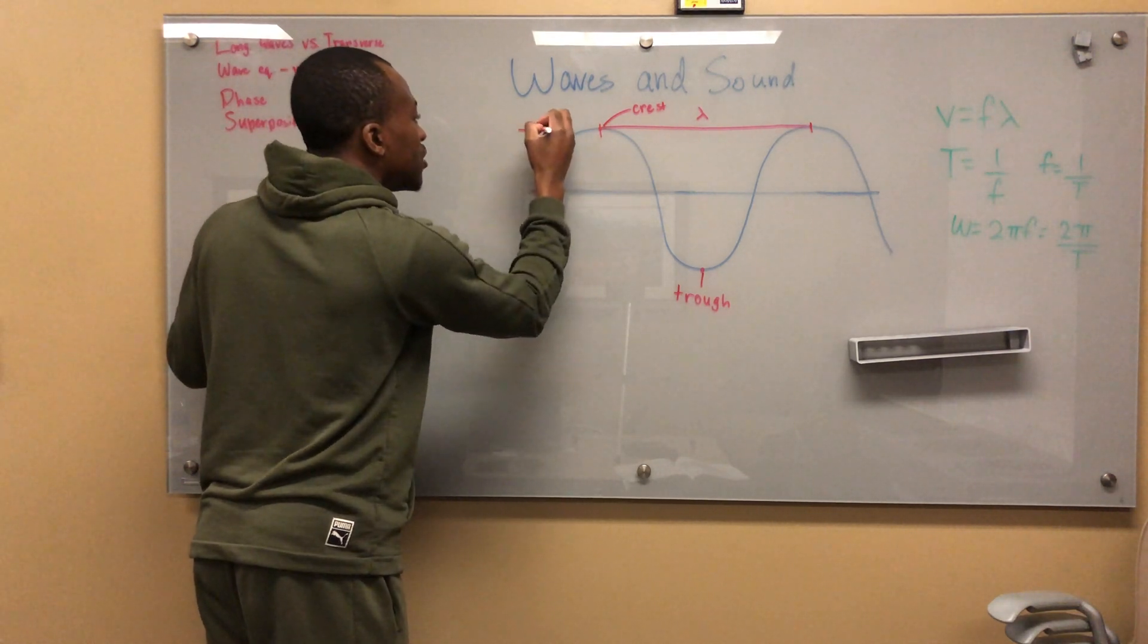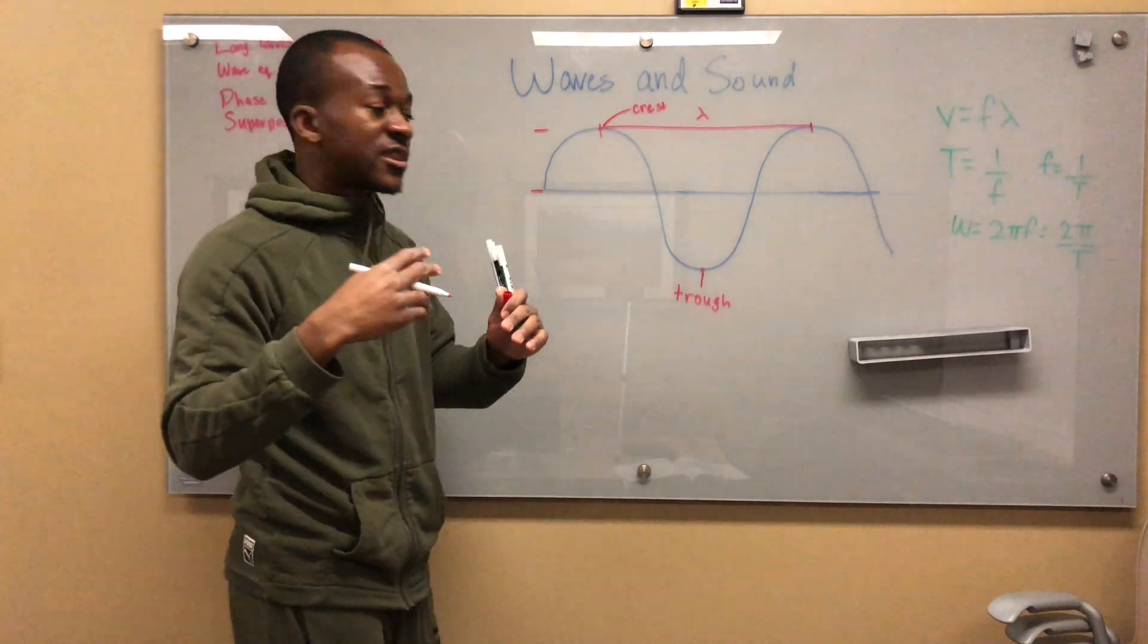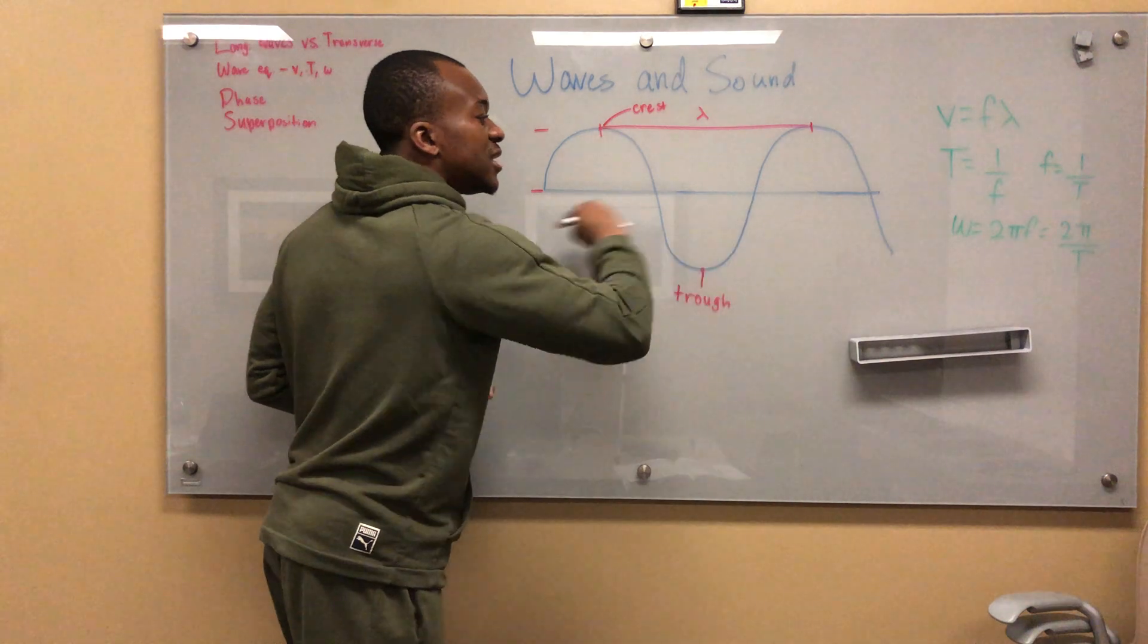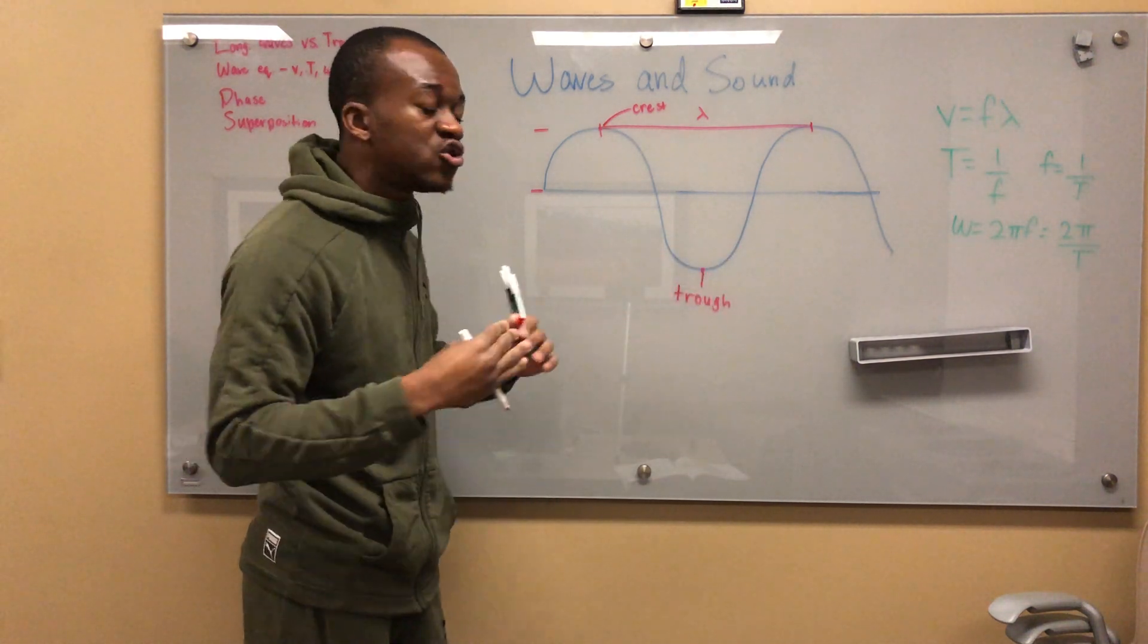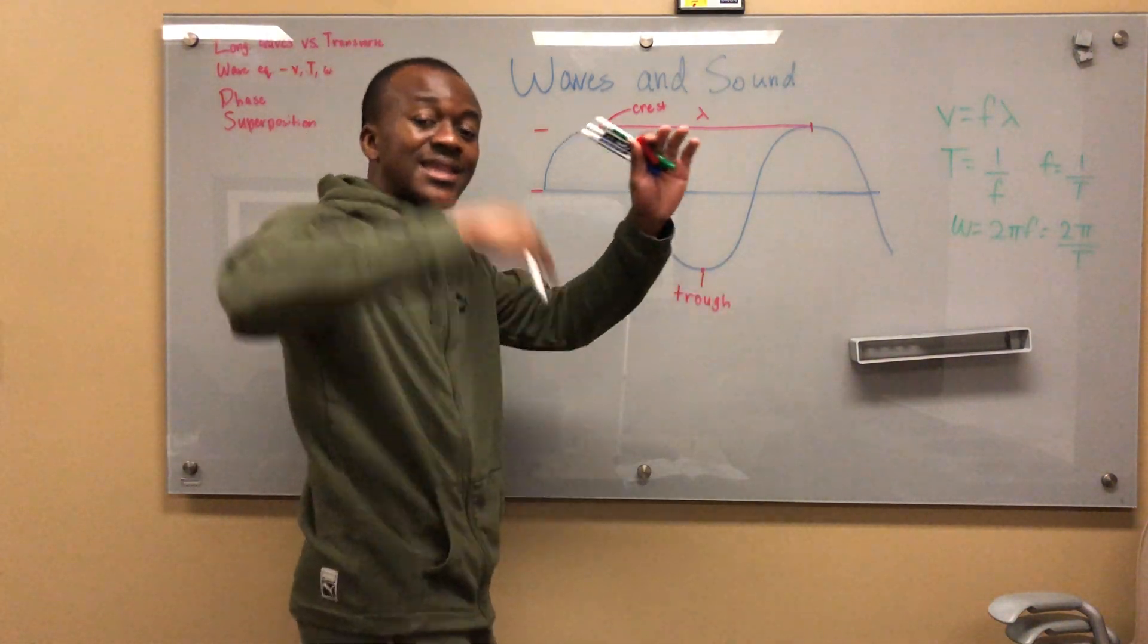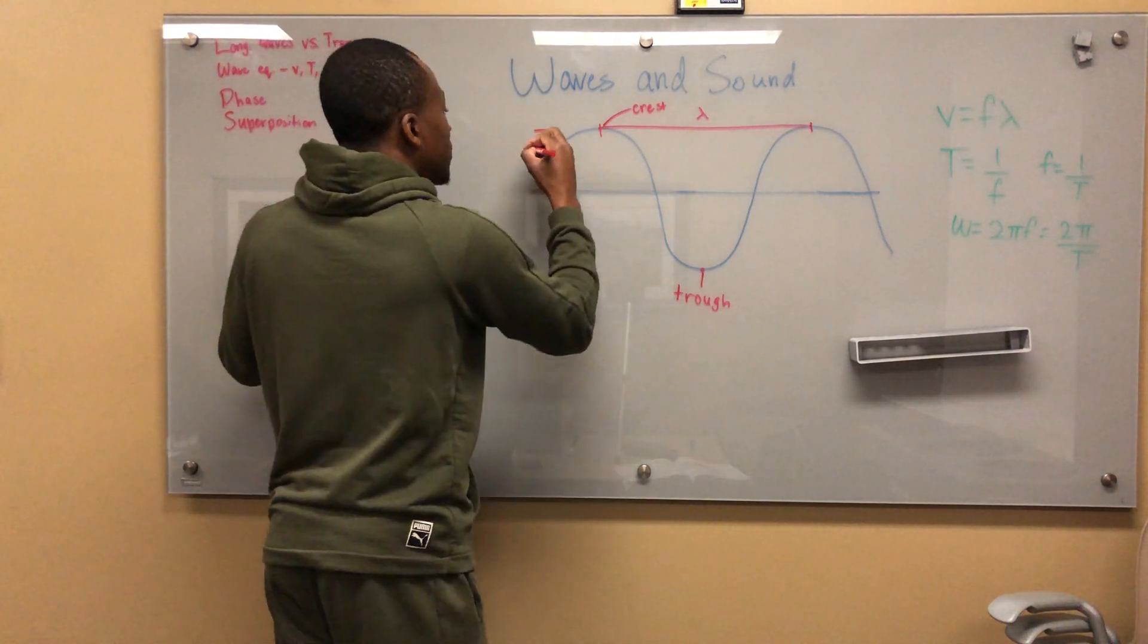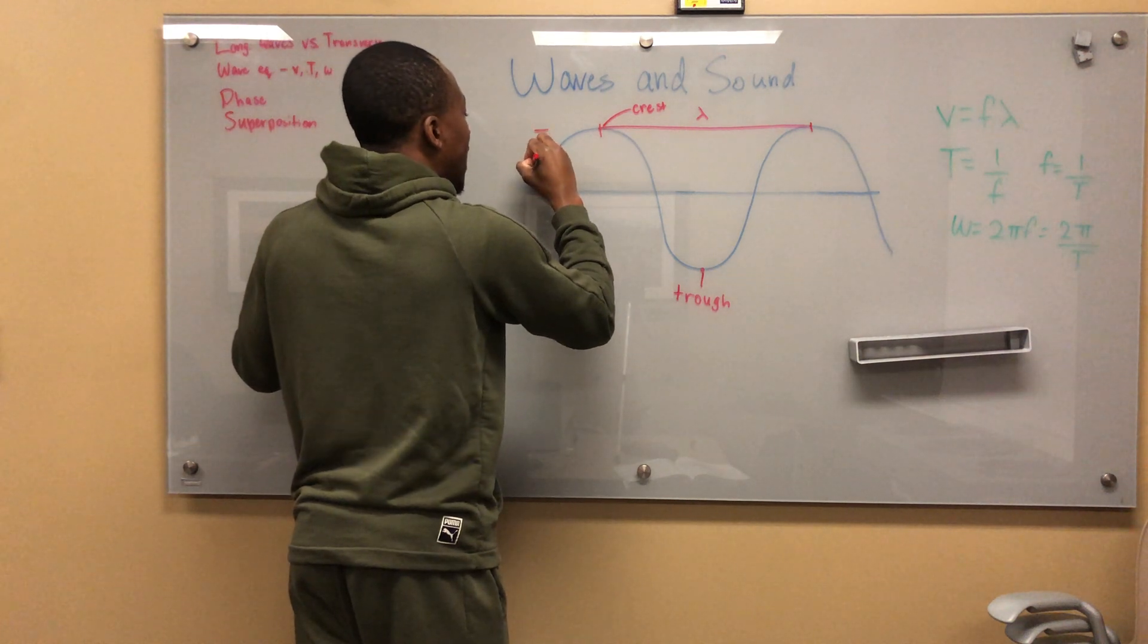It's the amplitude. The amplitude is the distance from the neutral point of the wave, the neutral axis, to the highest point. Let's say the distance from here to the crest - this would be the amplitude, and we can denote that with A.